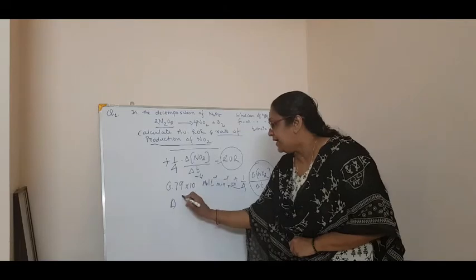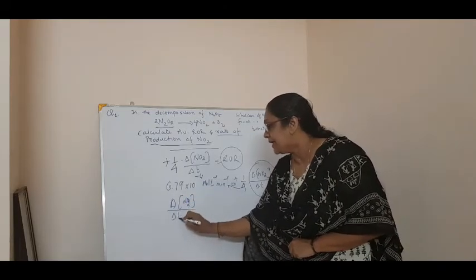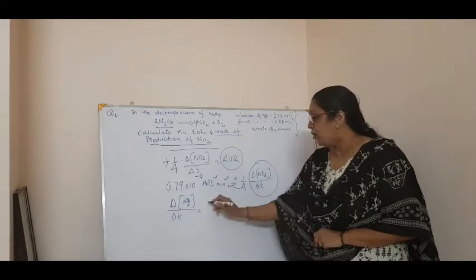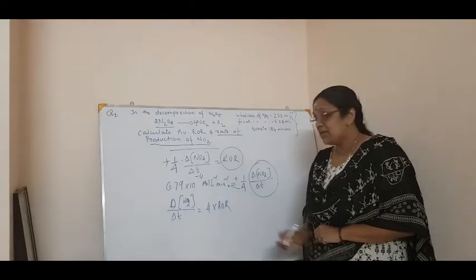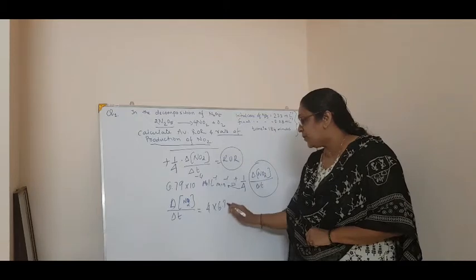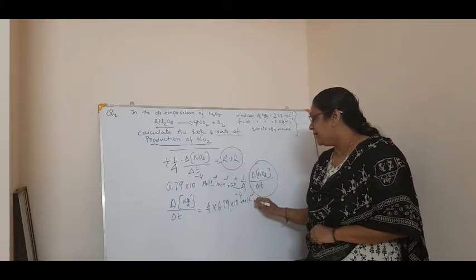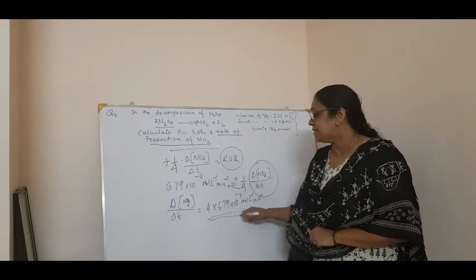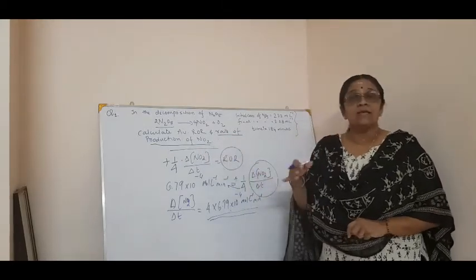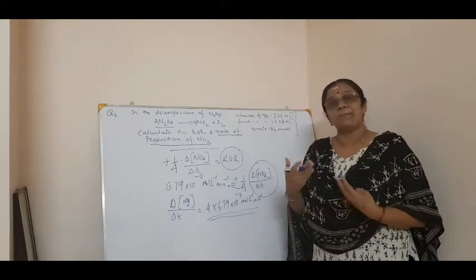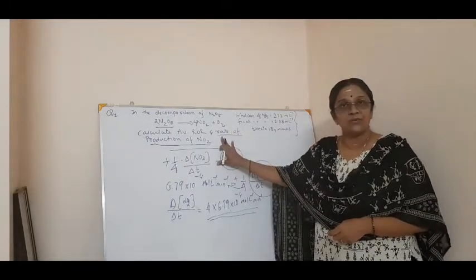Delta concentration of NO₂ divided by delta T is equal to 4 into the rate of reaction. That is 4 into 6.79 × 10⁻⁴ mol per liter per minute. This is how you calculate the rate of production of NO₂. Sometimes they can ask rate of appearance or rate of disappearance — in any format they can ask, but you should have that concept with you.